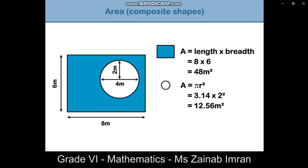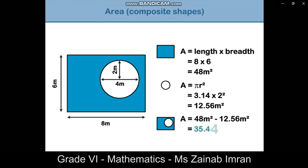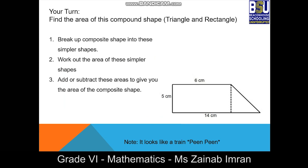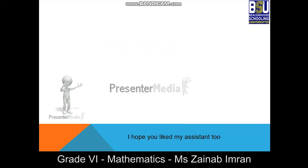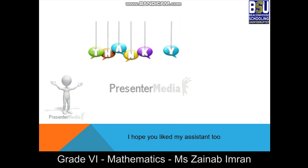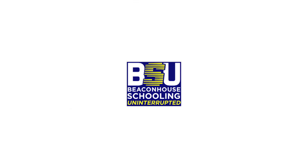Now you have learned how to find the area of composite and shaded shapes. As you know, without practice you can't learn maths. Now it's your turn — you are going to find the area of a compound shape, then find the area of another compound shape consisting of a triangle and rectangle, a circle-shaped garden, and a shaded shape. Thank you for watching.